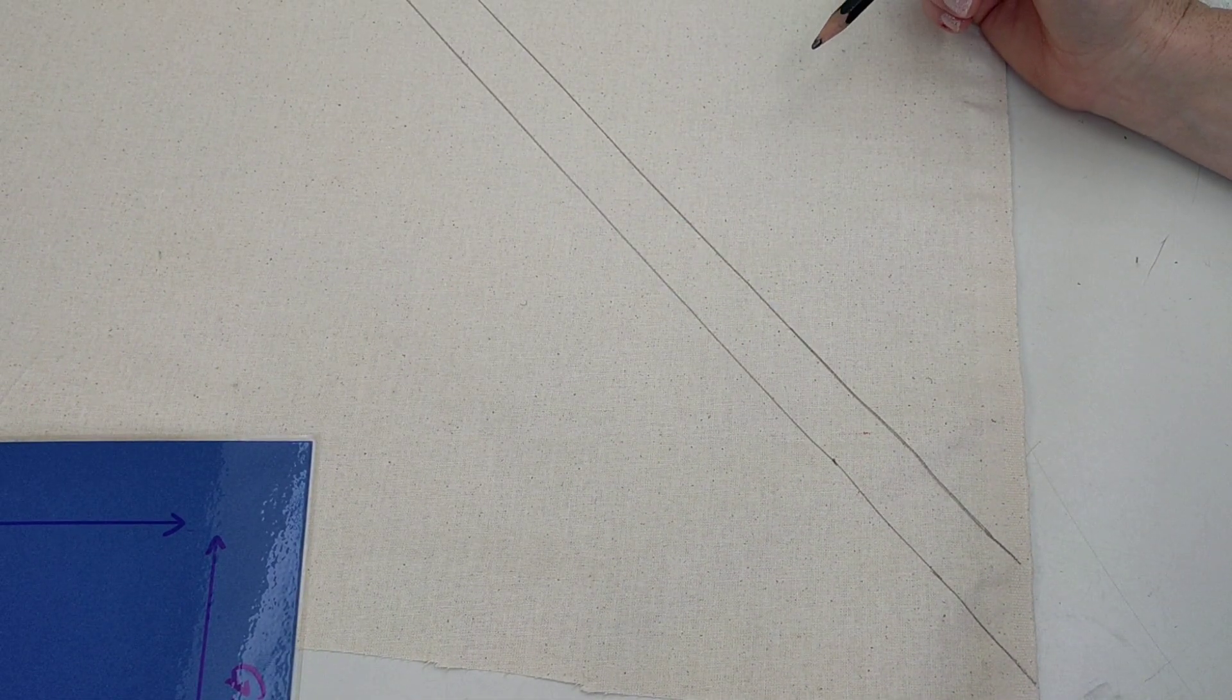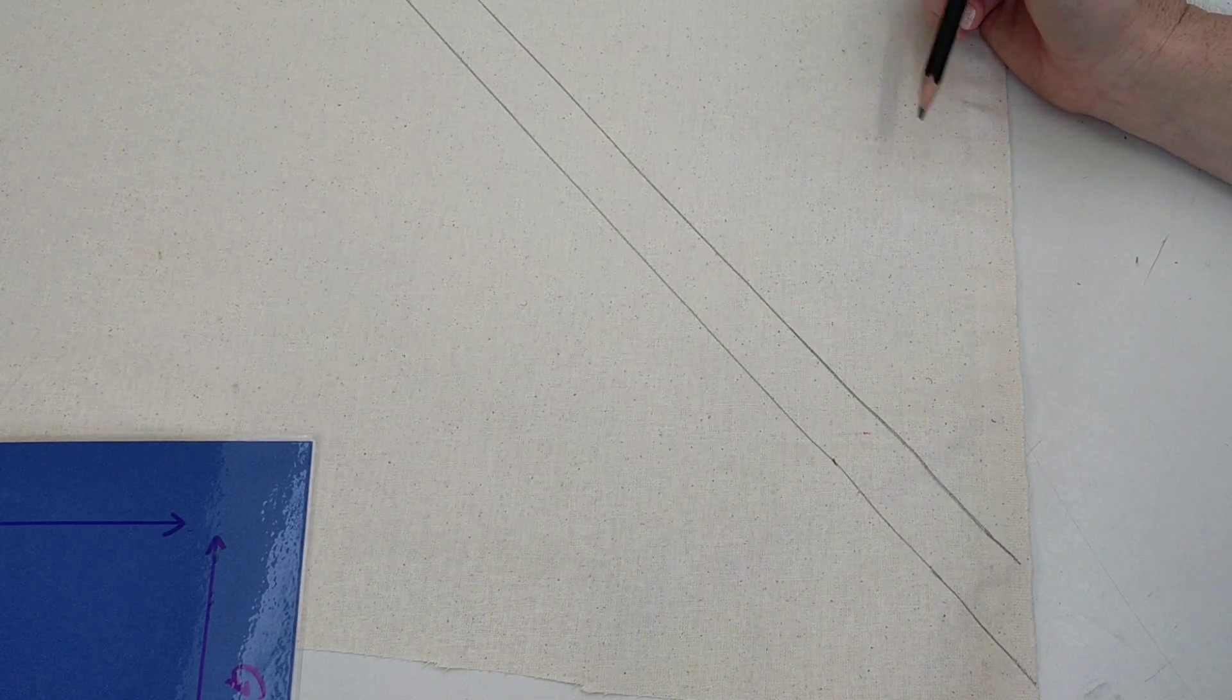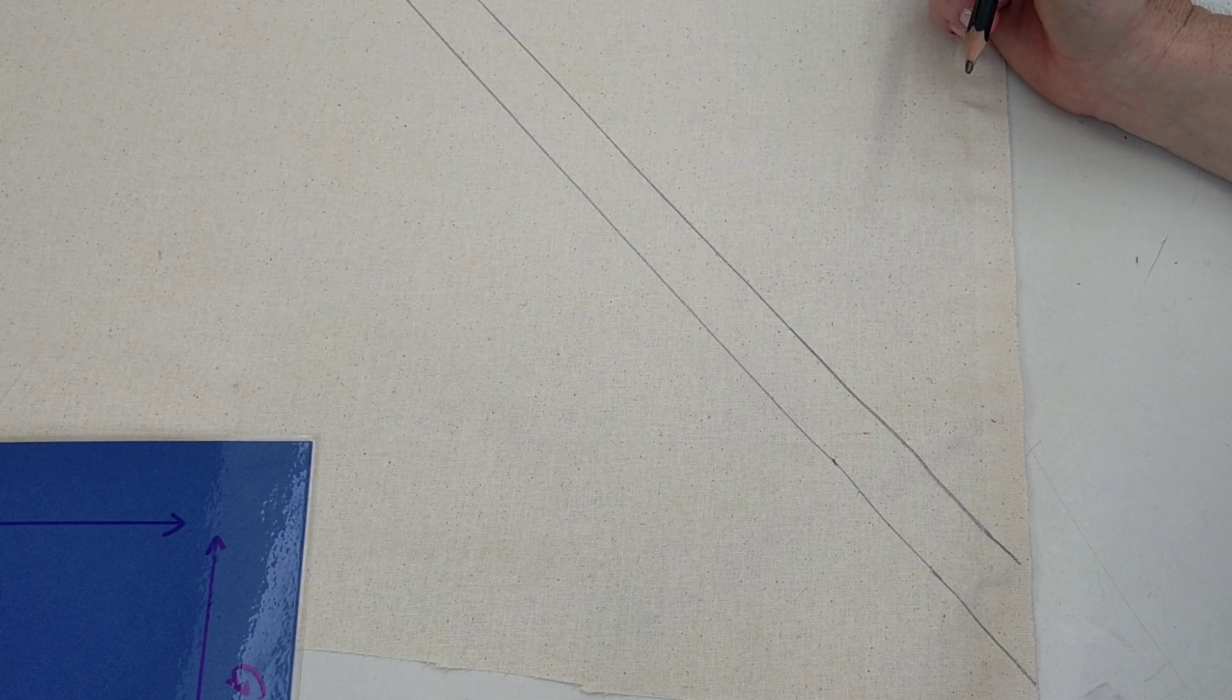So now I'm going to cut it out, and then we'll move over to the ironing board and I'll show you how to use the bias maker.